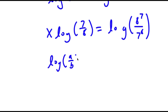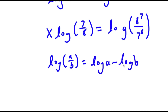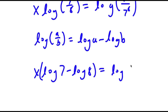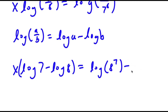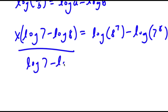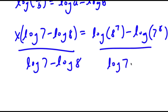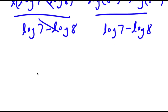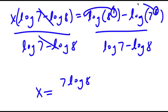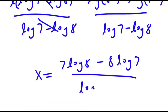Now, log of a over b is equal to log a minus log b. So log of 7 over 8 equals log 7 minus log 8, which equals log of 8 to the power of 7 minus log of 7 to the power of 8. If I divide both sides by log 7 minus log 8, these two cancel out. And I have x is equal to 7 times log 8 — because I can move the exponent to the front of both of these — minus 8 times log 7, all over log 7 minus log 8.